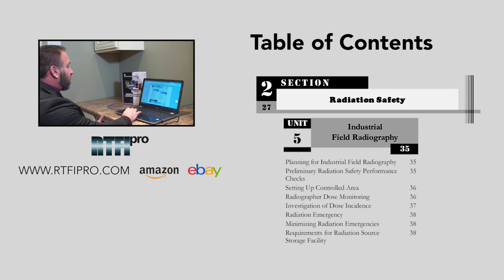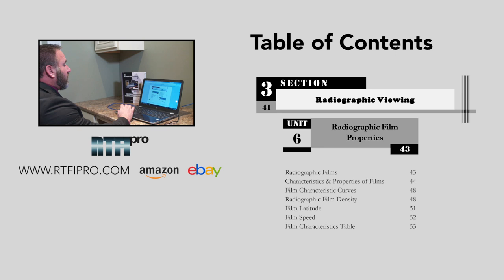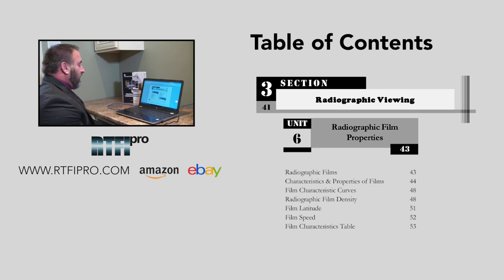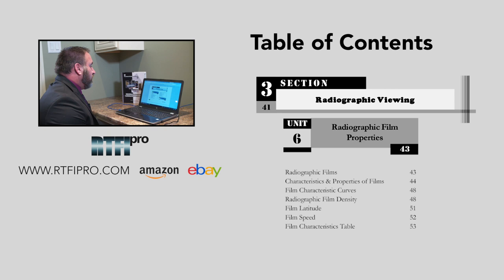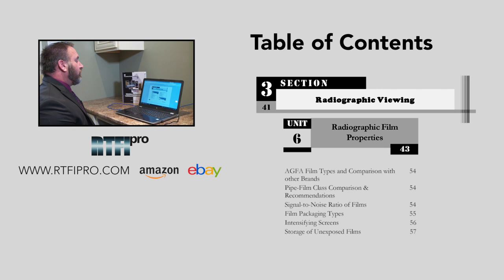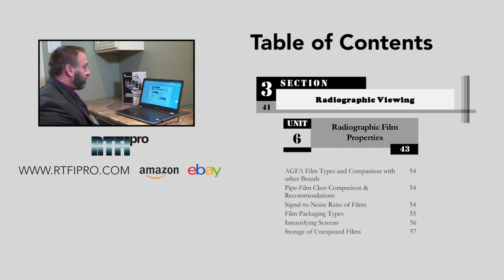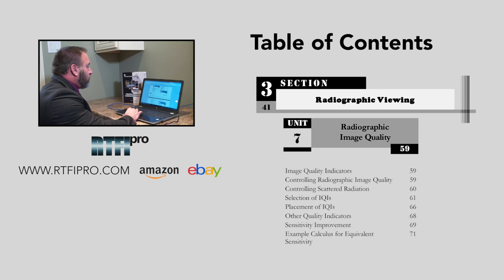That concludes section two. We're going into section three, radiographic viewing — a quite large section with a lot of theory and important material, especially IQI selection and radiographic film. Unit six is titled radiographic film properties, covering: radiographic film characteristics and properties, film characteristic curves, radiographic film density, film latitude, film speed, film characteristic table, Agfa film types in comparison with other brands, pipe film class comparison and recommendation, signal to noise ratio of films, film packaging types, intensifying screens, and storage of unexposed films.